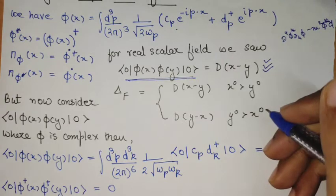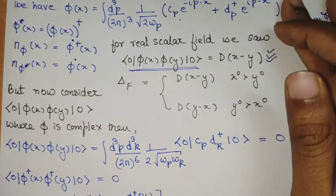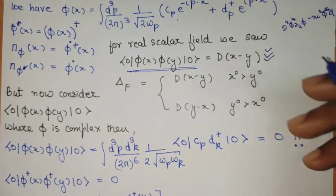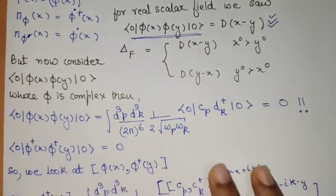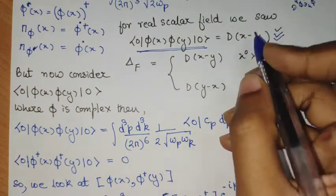So this was the Feynman propagator and now the point is, will this entire thing hold in the case of the complex Klein-Gordon field? One simple calculation shows that it doesn't hold.